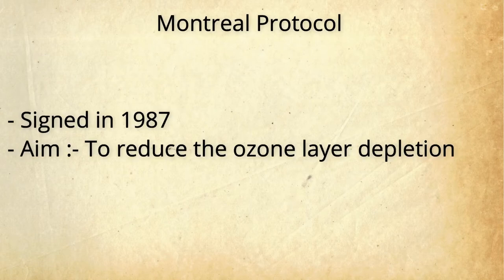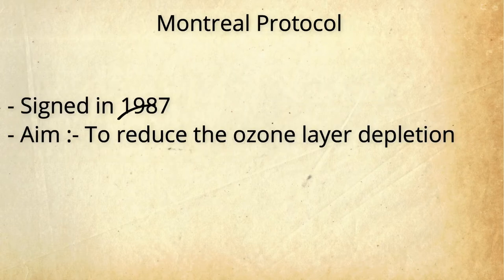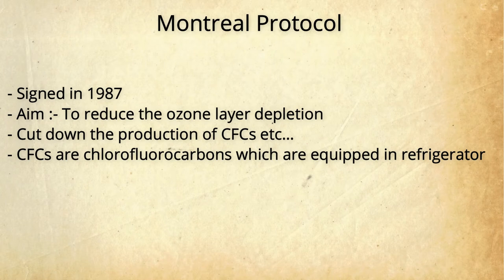The Montreal Protocol was signed in the year 1987 and was adopted for the reduction of ozone layer depletion. While the Vienna Convention talks about the protection of the ozone layer, it does not give suggestions for reducing depletion — the Montreal Protocol addresses that. It seeks to cut down the production and consumption of ozone-depleting substances such as chlorofluorocarbons (CFCs) in order to protect the earth's fragile ozone layer.